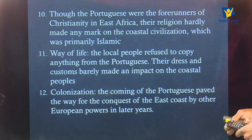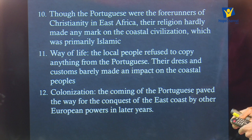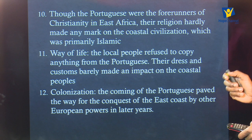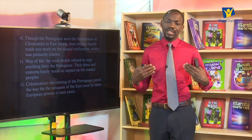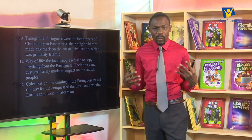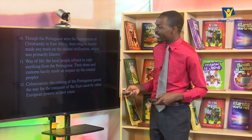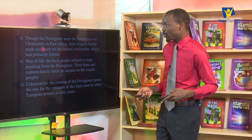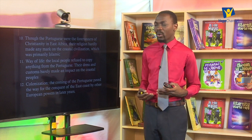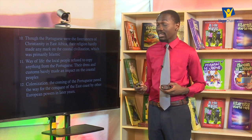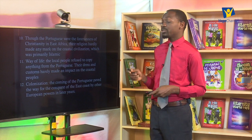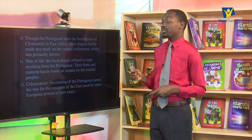Number ten, though the Portuguese were the forerunners of Christianity in East Africa, their religion hardly made a mark on the coastal civilization, which was primarily Islamic. They came with the motive of spreading Christianity, but the approach they used was not favorable and the people resisted. That is why today, if you go to the coast, you realize most of the people there are Muslims.